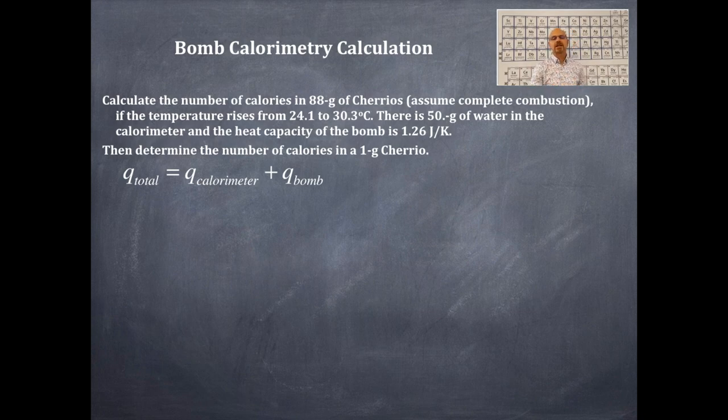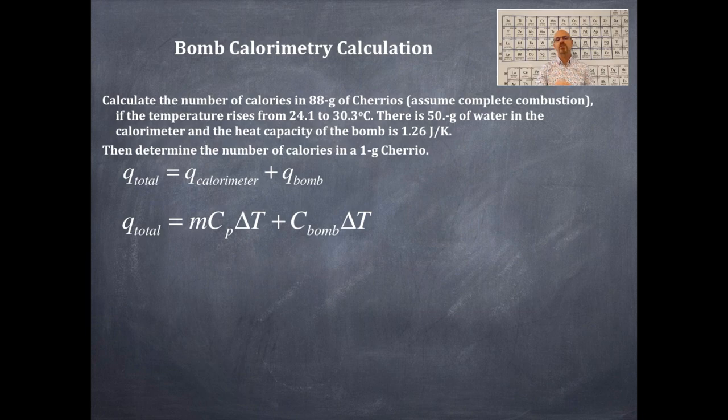So we're going to fill in a little bit what Q is equal to for each one of those. Do a little substitution. The Q total is the sum of the two, obviously, but the Q for the calorimeter is going to be the mass of the water times the specific heat capacity for water times the change in temperature of the water, plus that for the bomb, and it's the heat capacity for the bomb times the change in temperature. The change in temperature is going to be the same under both circumstances. You're going to take that 30.3 degrees Celsius minus the 24.1. They both have one decimal place, so you're going to have one decimal place.